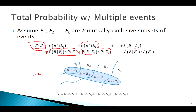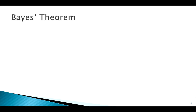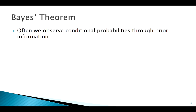The Law of Total Probability is the first of our more advanced probability rules. The second is Bayes' Theorem. We already know a little about conditional probabilities, and there are a couple of things to remember going into Bayes' Theorem.